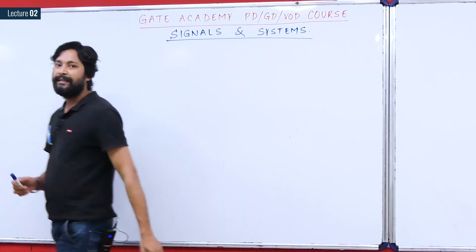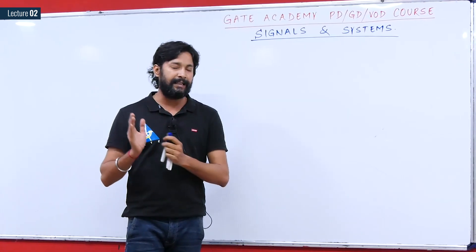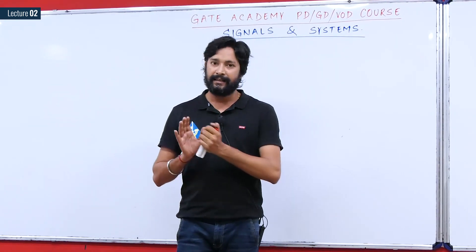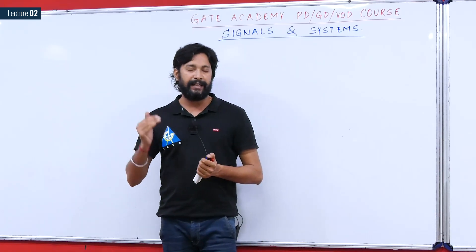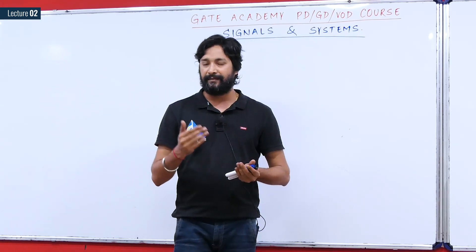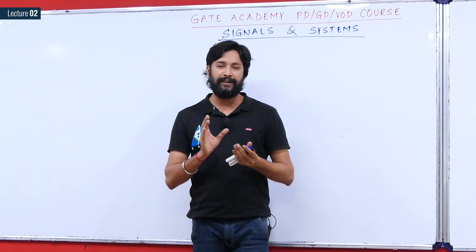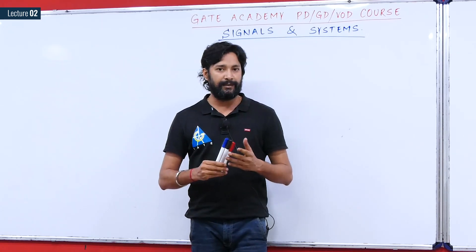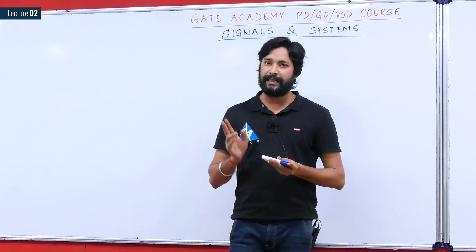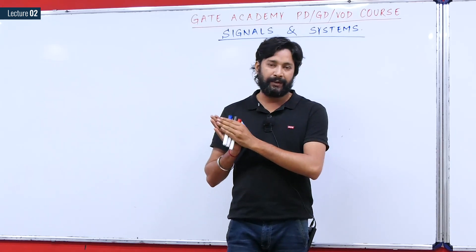If you want to recall, a signal can be expressed mathematically as a function of one or more independent variables. In the syllabus of signals and systems, the independent variable we normally take is time. If a signal is a function of only one independent variable, then it is called a one-dimensional signal — for example, voltage signal V(t) or current signal I(t).